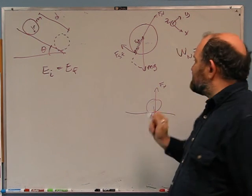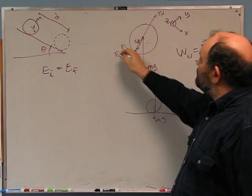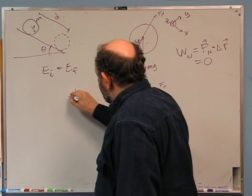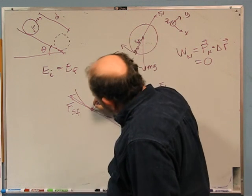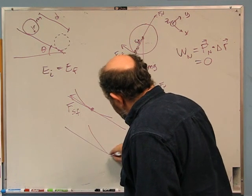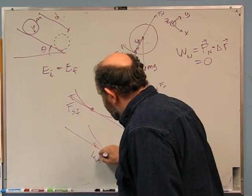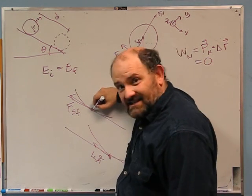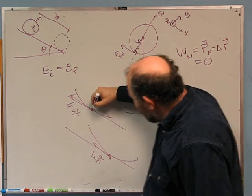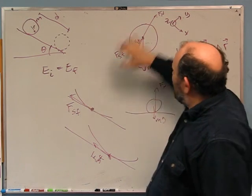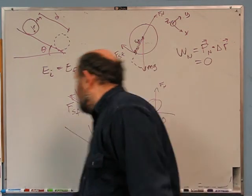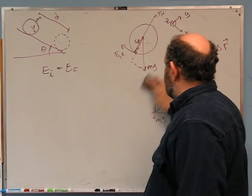The static friction is the subtle one. It sure looks like it's doing work, but if you look closely, the static friction acts at the contact point, and the contact point itself is not moving. A little while later the contact point will have moved, and it's a new point that static friction acts on. But at this one instant, this point is at rest, so the force is not doing work. So static friction does no work — we have conservation of energy.